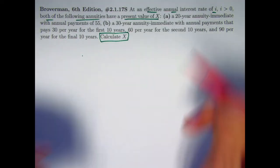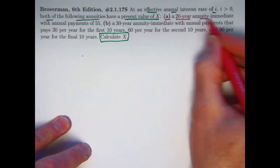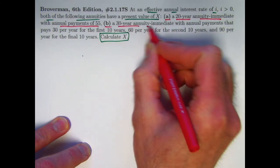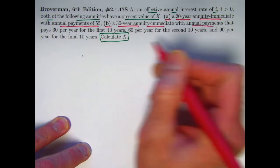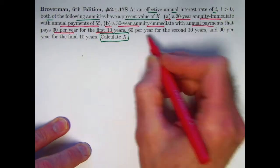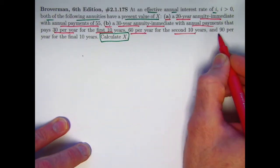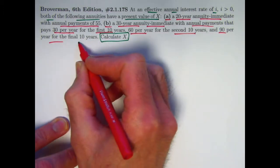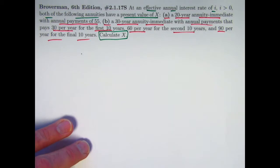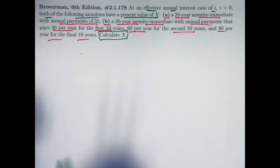We've got, first of all, a 20-year annuity immediate with annual payments of 55, and secondly, a 30-year annuity immediate with annual payments that are going to occur in stages: 30 per year for the first 10 years, 60 per year for the second 10 years, and 90 per year for the final 10 years. Alright, before I get into solving the problem, let me go ahead and derive a couple formulas.